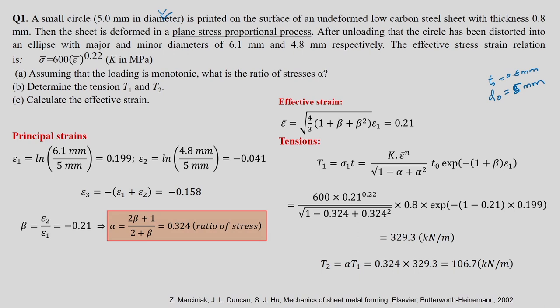It is a plane stress proportional process. After deformation, the major dimension is D_major equals 6.1 mm and the minor dimension is D_minor equals 4.8 mm. The effective stress-strain relationship is the standard one. We need to get alpha, then t_1 and t_2, and then effective strain. From the dimensions, epsilon_1 equals ln(6.1/5), which is about 0.199, and epsilon_2 equals ln(4.8/5), which is a negative value.